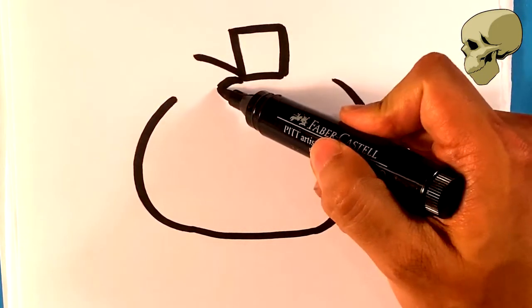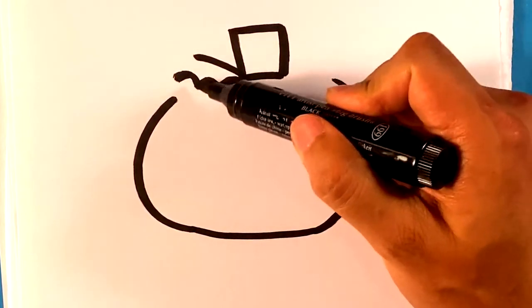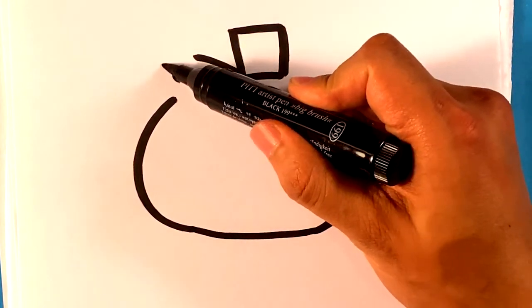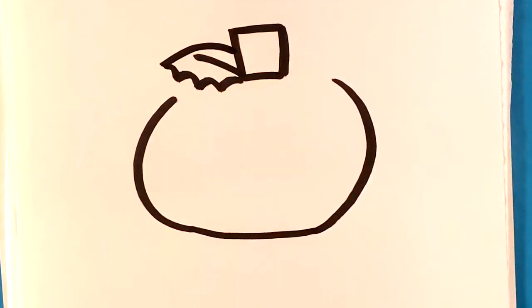I'm going to weave kind of like a U-shape, a U-shape, a U-shape. Another U-shape. Pull up. That's going to be the leaf.